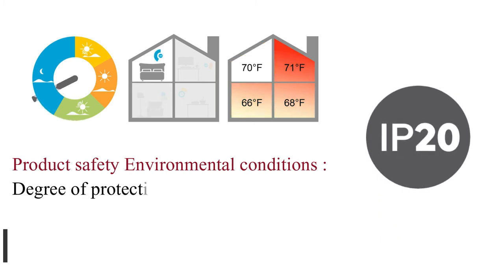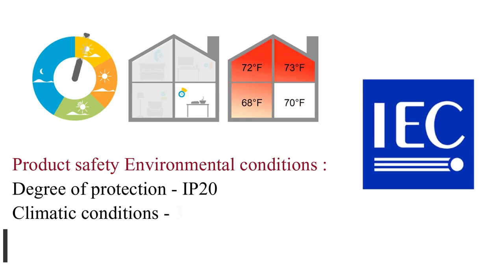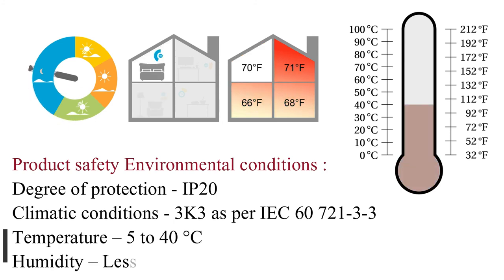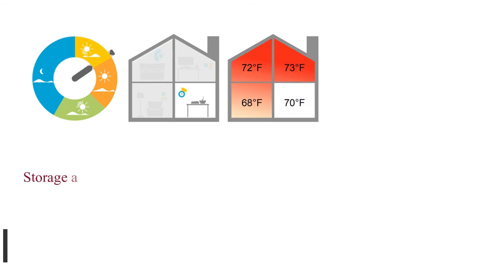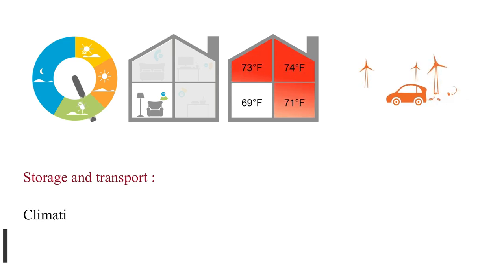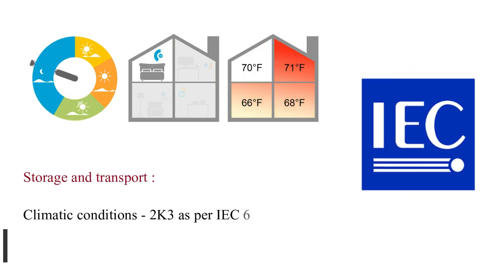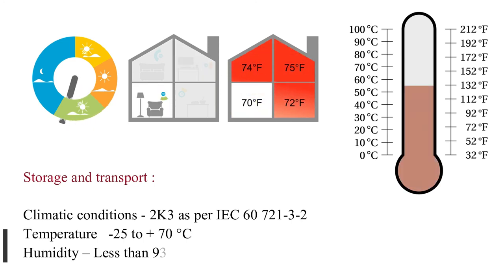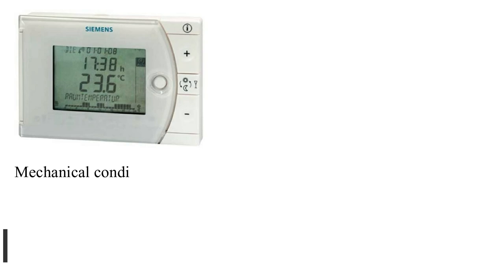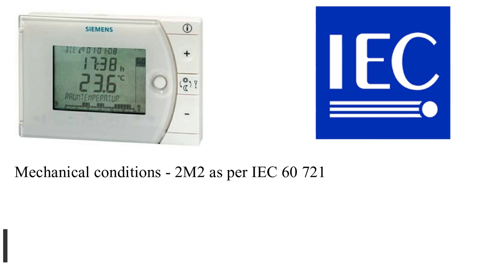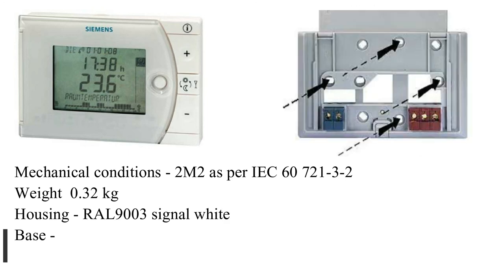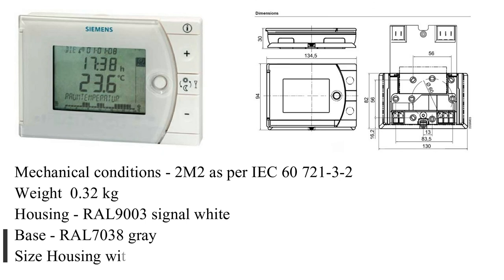Actual value display: 0.2°C. Time display: 1 minute. Product safety — environmental conditions: degree of protection IP20. Climatic conditions 3K3s per IEC 60721-3-3, temperature 5 to 40°C, humidity less than 85% RH. Storage and transport climatic conditions 2K3s per IEC 60721-3-2, temperature −25 to +70°C, humidity less than 93% RH. Mechanical conditions 2M2 per IEC 60721-3-2. Weight: 0.32 kg.